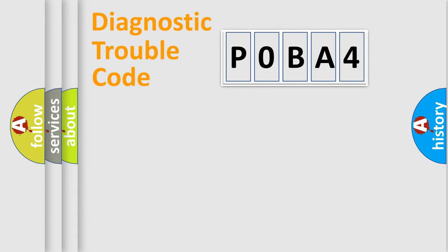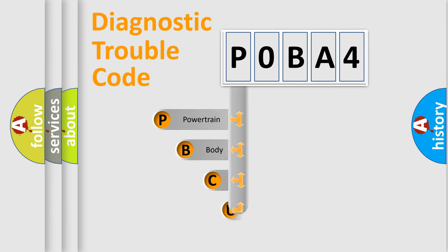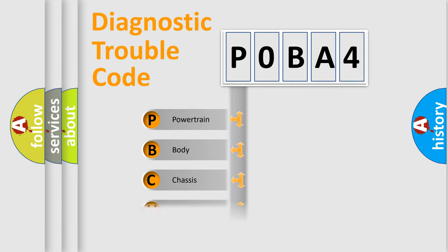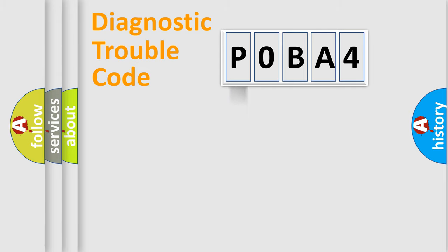Let's do this. First, let's look at the history of diagnostic fault code composition according to the OBD2 protocol, which is unified for all automakers since 2000. We divide the electrical system of an automobile into four basic units: Powertrain, Body, Chassis, and Network.